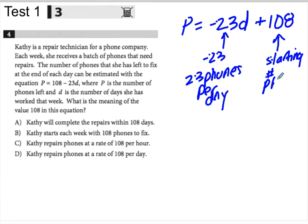So at the start of the week, she has 108 phones, right? And then she's able to clear 23 of them each day. So this is your slope, and this is your y-intercept.